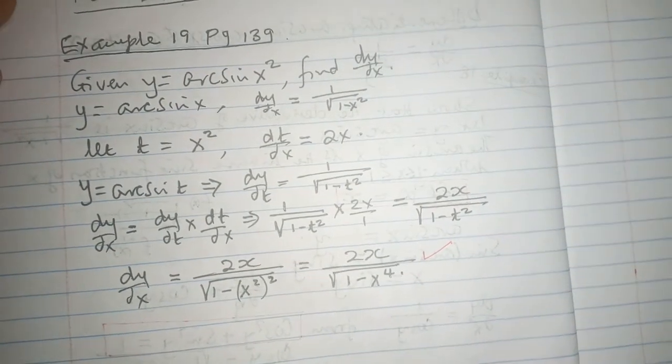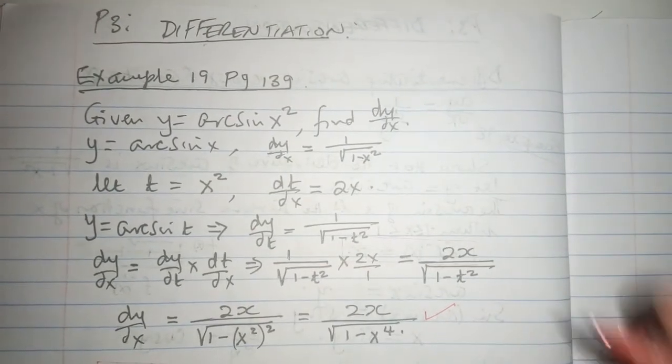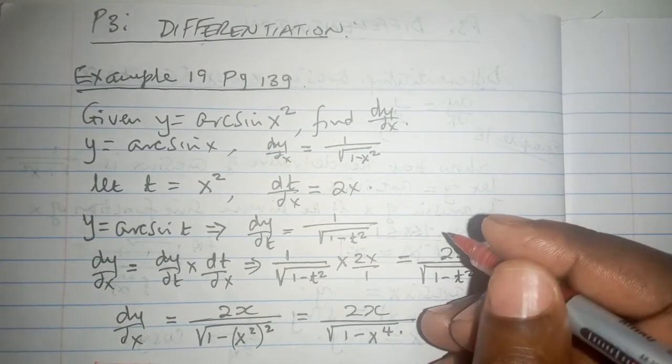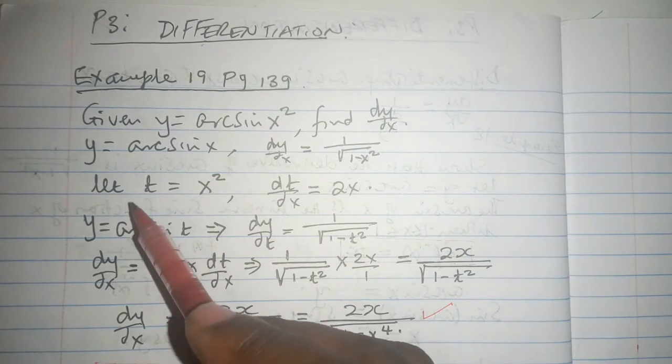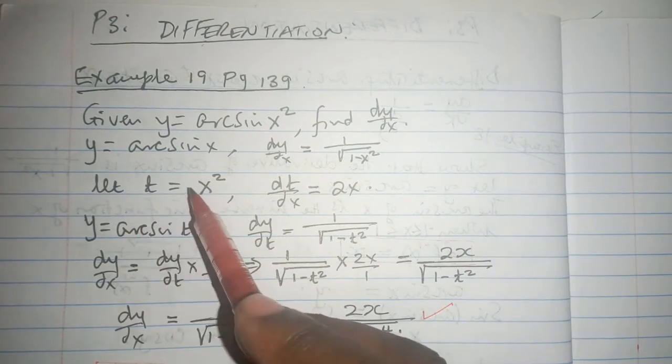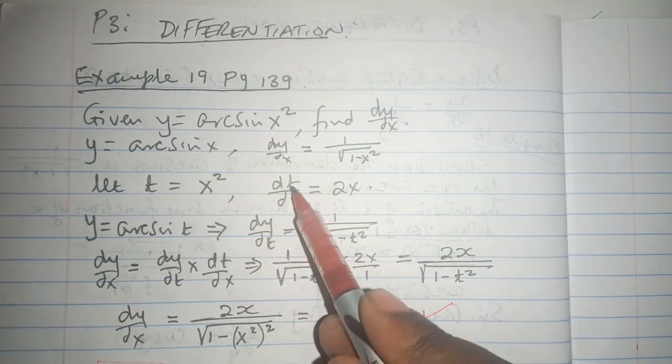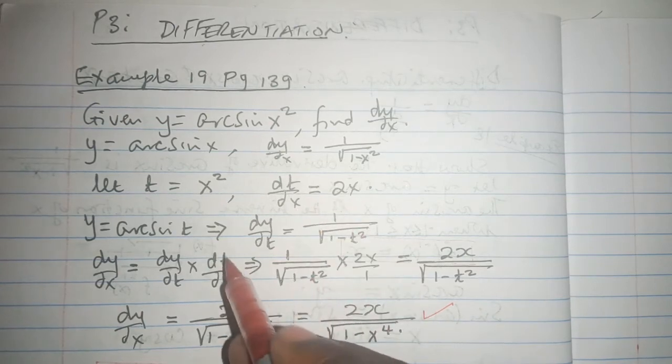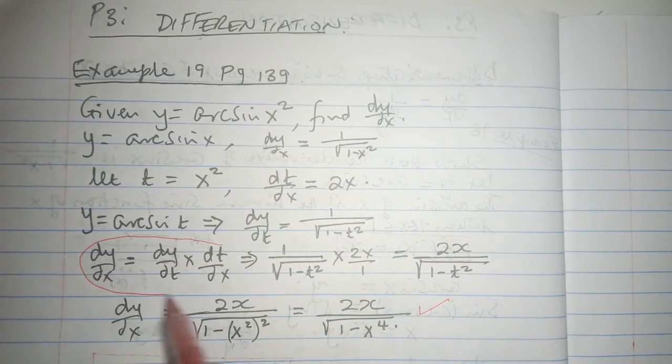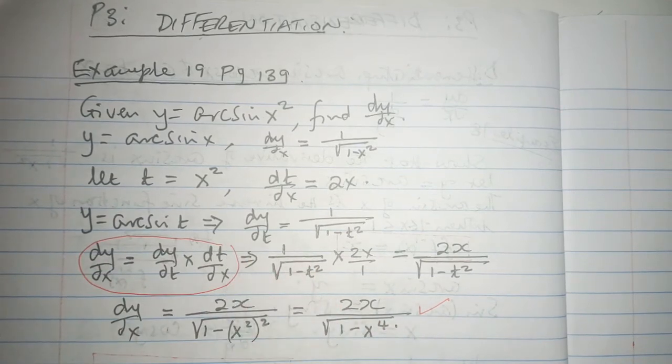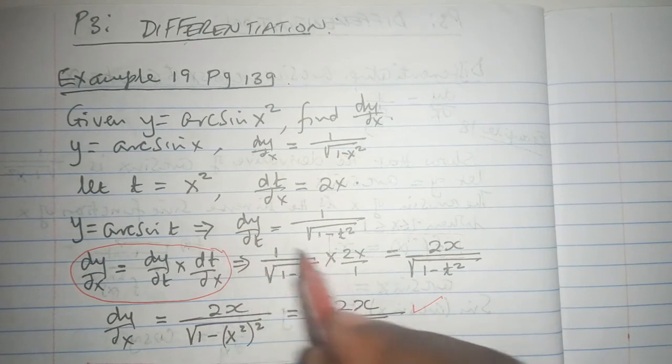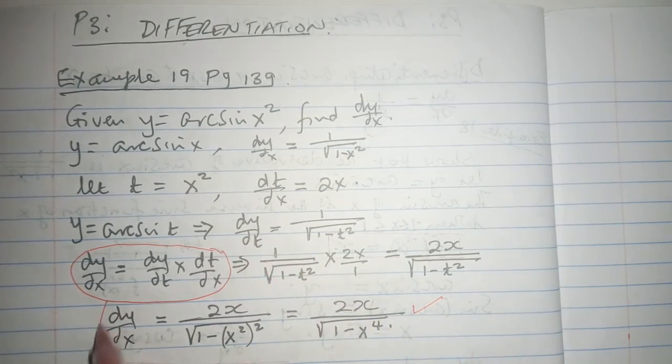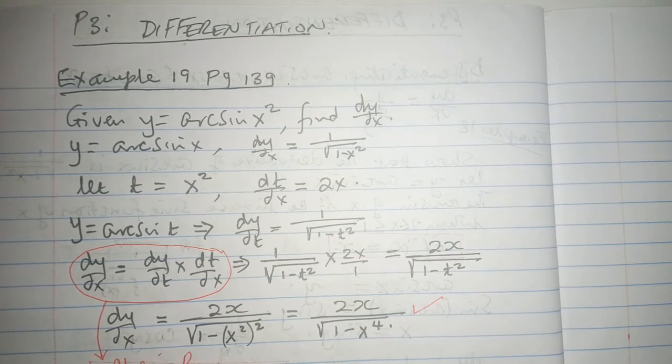But again, we must remember that we have gotten a lot of assistance from when we have to take t equals x squared and dt/dx is going to be 2x. So if you look at this particular step, it is so much of what we know, so it has been very helpful to us. Remember, we have used the chain rule and this chain rule has been able to assist us a great deal.